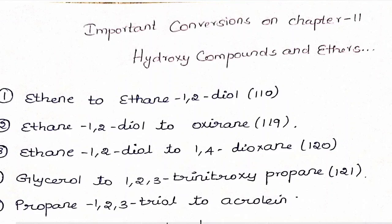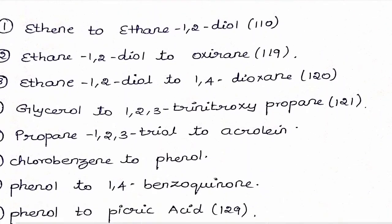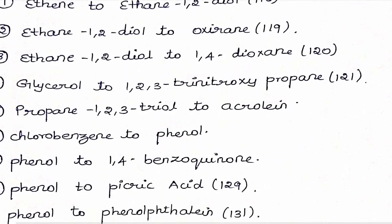The first conversion is ethene to ethane-1,2-diol on page 10. The second conversion is ethane-1,2-diol to oxirane on page 119. The third one is ethane-1,2-diol to 1,4-dioxane on page 120. The fourth one is glycerol to 1,2,3-trinitroxypropane on page 121. Also, propane-1,2,3-triol to acrolein.